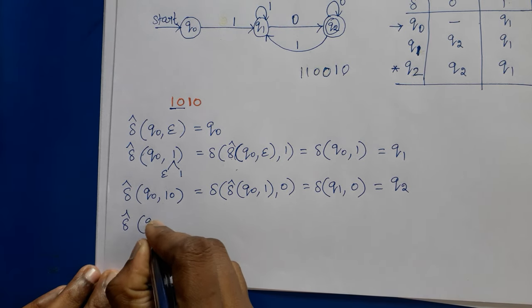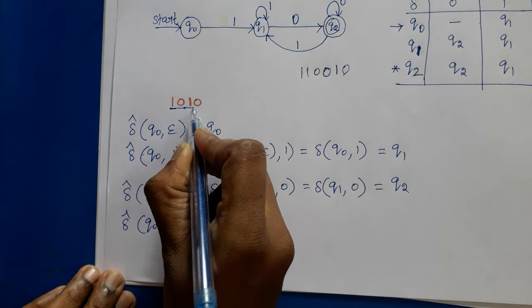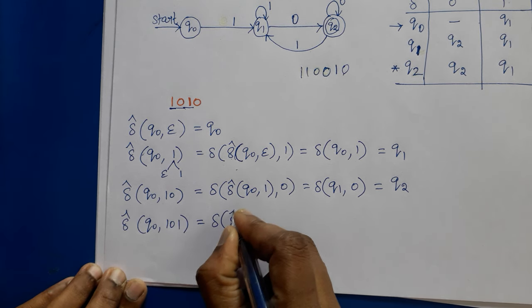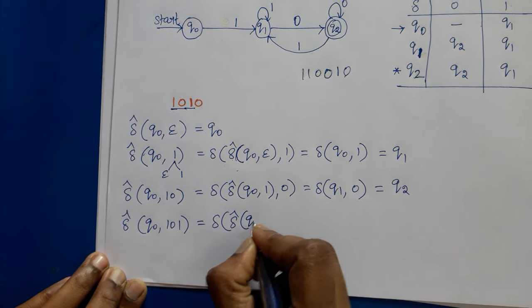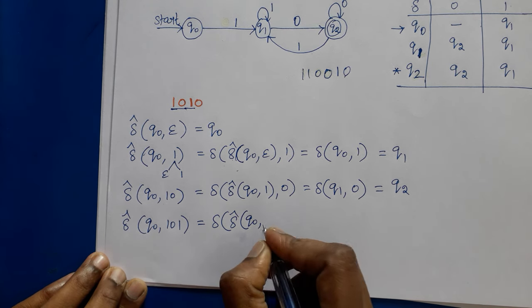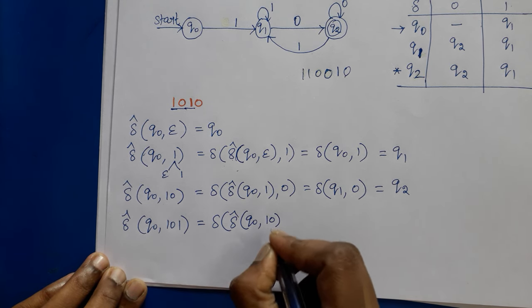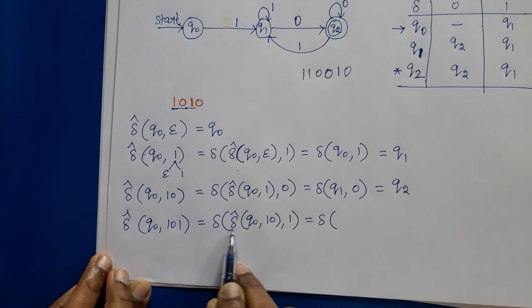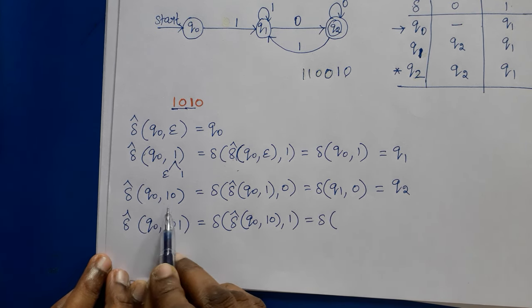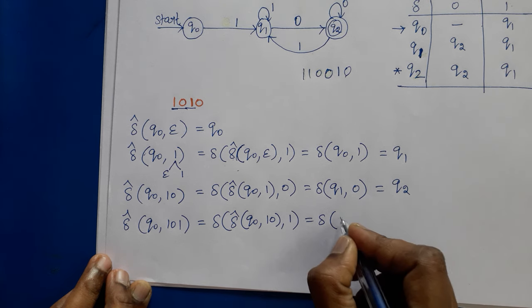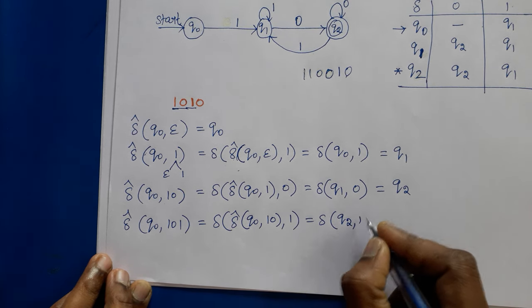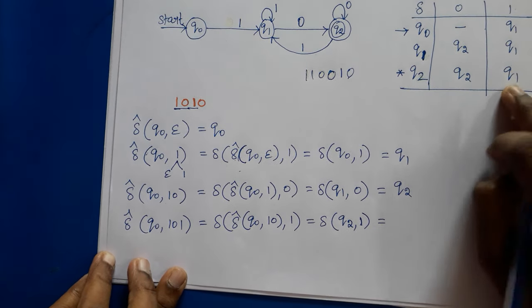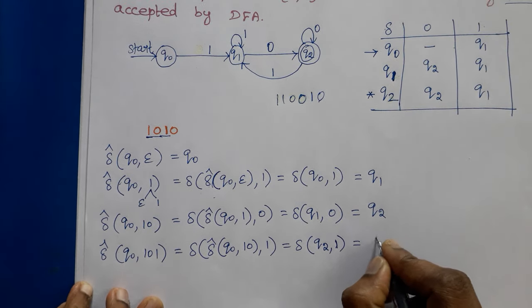Then find delta-cap(Q0, 101). W = 101, so A = 1 and X = 10. We get delta-cap(Q0, 101) = delta(delta-cap(Q0, 10), 1) = delta(Q2, 1) = Q1.